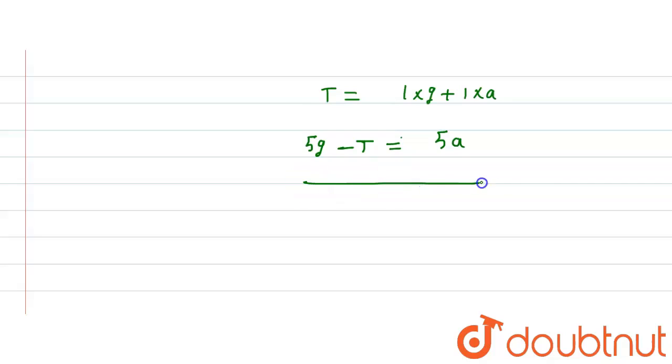Now we can equate these equations. When the two Ts cancel, we get 5g minus g equals 5a plus 1a. So 4g equals 6a.